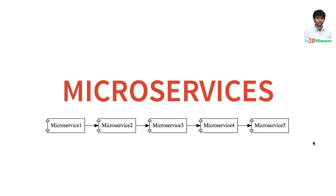Whenever we talk about service-oriented architecture, it's also creating independent services, and independent services are small. So that's a great question to ask: what is the difference between a microservices architecture and a SOA architecture? Let's look at the key differences right now.